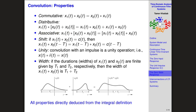The third property is associative. Convolving X₁ with the result of X₂ convolved with X₃ is the same as first convolving X₁ with X₂ and then convolving that result with X₃. Note that not all operations have these properties — matrix multiplication, for example, is not commutative: X times Y is not the same as Y times X.